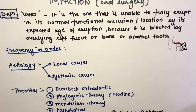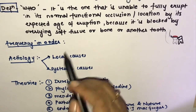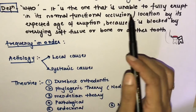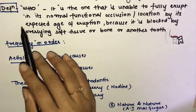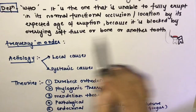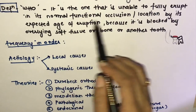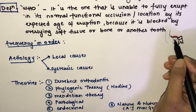The topic is impaction from oral surgery. The definition of impaction according to WHO (World Health Organization) is: it is a tooth that is unable to fully erupt in its normal functional occlusion or location by its expected age.